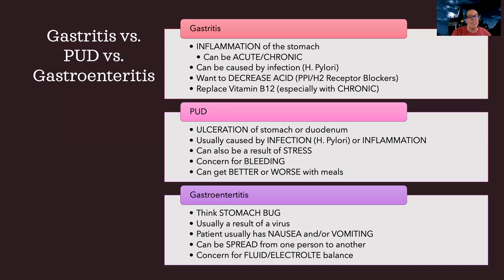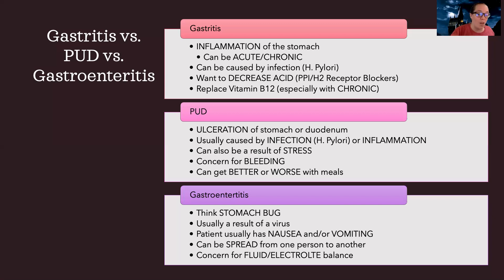Then there's gastroenteritis, and this is completely different. The other two were inflammation and ulceration — this is the stomach bug. Think like a virus. You go to a restaurant, eat something, it doesn't sit well — that's gastroenteritis. There's a lot of nausea and vomiting. One key difference: gastritis and peptic ulcer disease are not contagious, whereas if you're around someone with a stomach bug, you can totally get it. I'm worried about fluid and electrolytes because with gastroenteritis, they can have a lot of nausea and vomiting. Think stomach bug — just puking everything up because of infection.